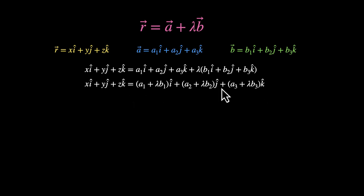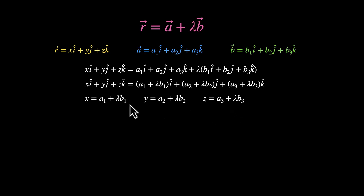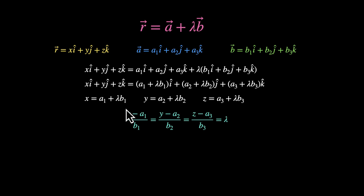Now we have to relate x, y, and z by eliminating Lambda. Lambda equals (x minus A1) divided by B1, equals (y minus A2) divided by B2, equals (z minus A3) divided by B3. So: (x minus A1)/B1 = (y minus A2)/B2 = (z minus A3)/B3 = Lambda. This gives us the equation of the line in Cartesian form — plug in B1, B2, B3 in the denominators and A1, A2, A3 in the numerators.